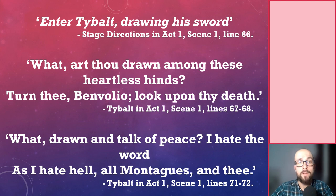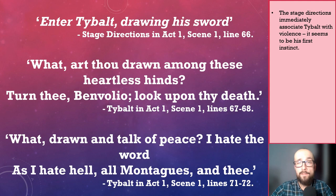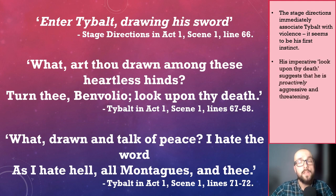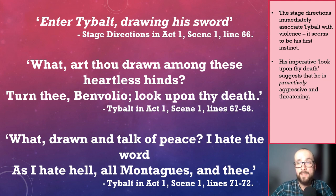The first quotation immediately associates Tybalt with violence, for the stage direction 'drawing his sword' creates the impression that he reaches for his weapon as soon as he enters the scene, looking to take part in a fight before he fully understands why a fight is taking place. Violence appears to be Tybalt's first instinct rather than logic. But Tybalt is not just violent in a reactionary way — he is proactively threatening and aggressive too.